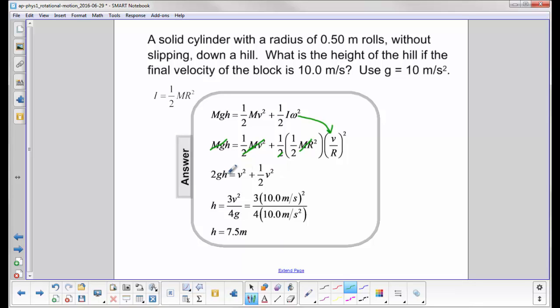Now we're solving for h. This becomes three-half v squared. We divide through by 2g, and we wind up with the height is 3v squared over 4g. We substitute in our values, and we come up with the height of 7.5 meters.